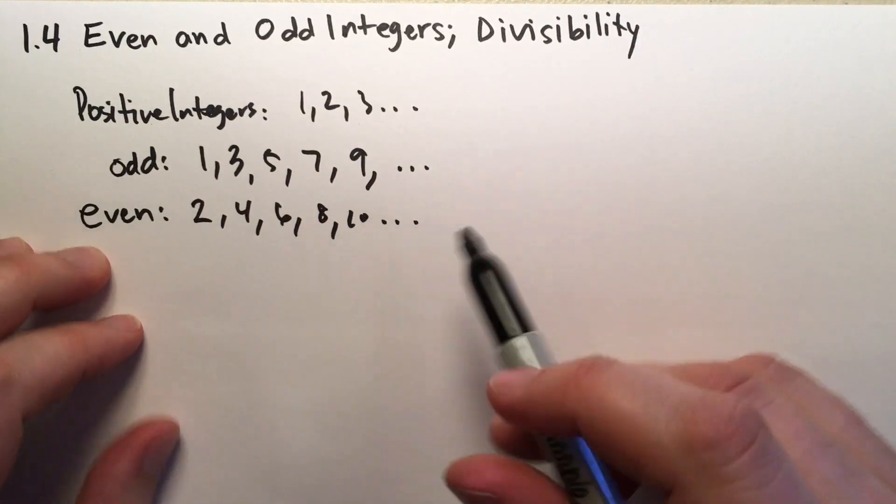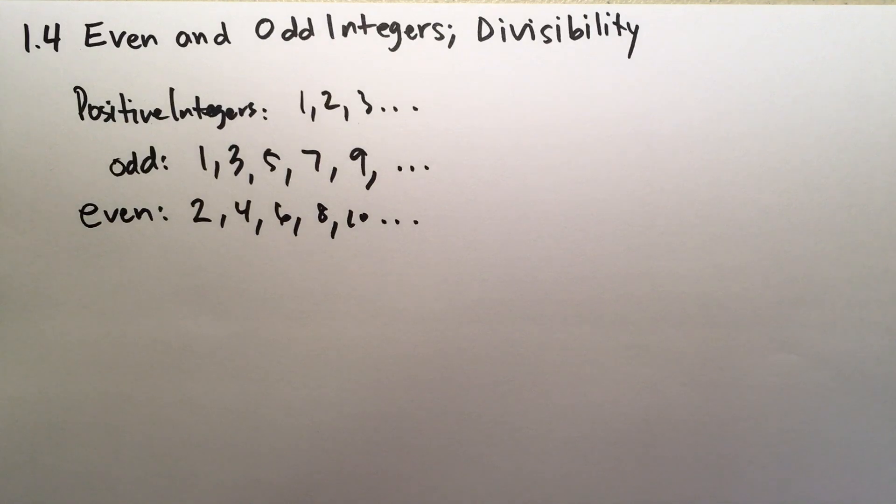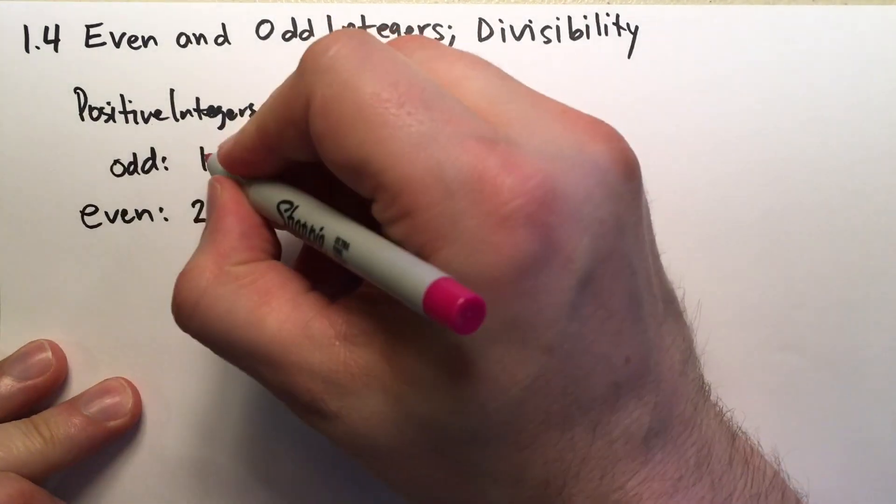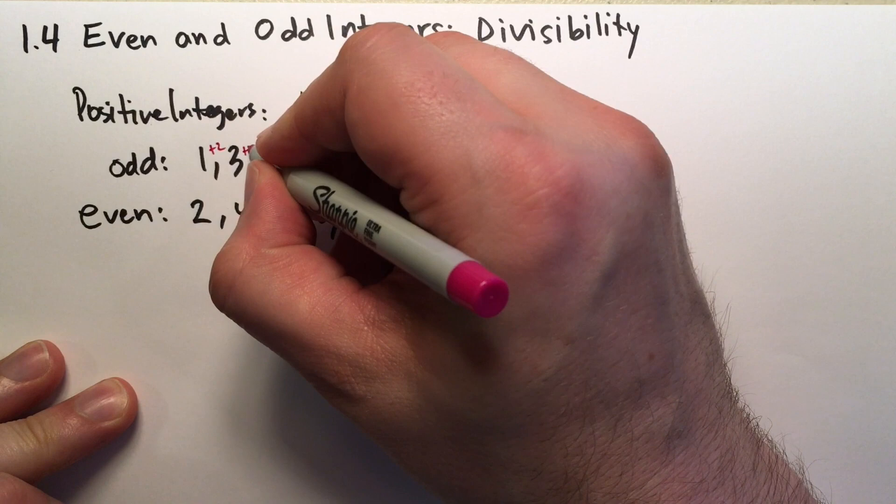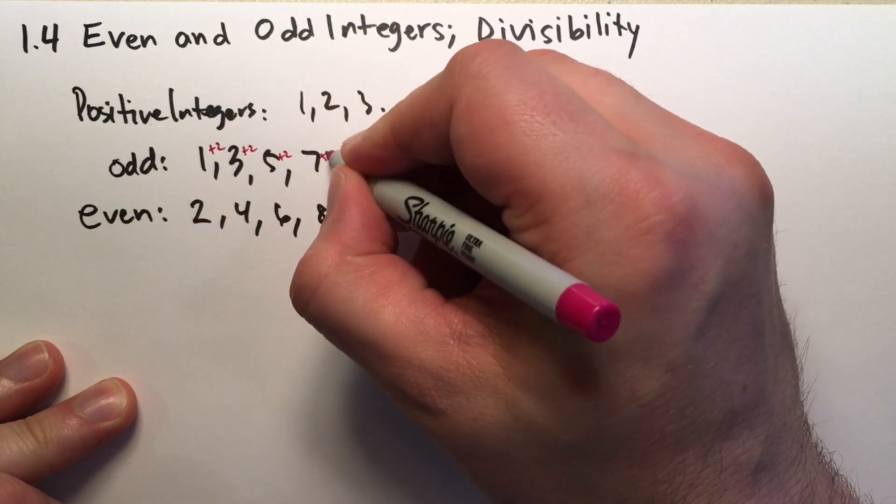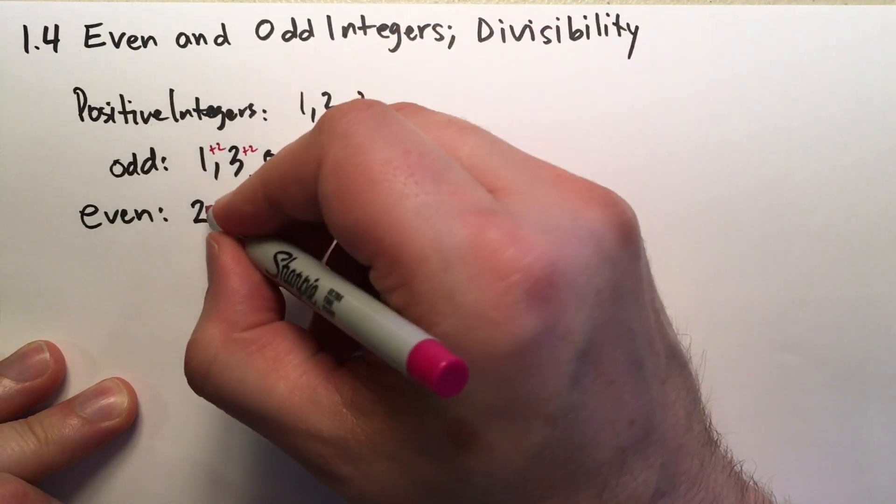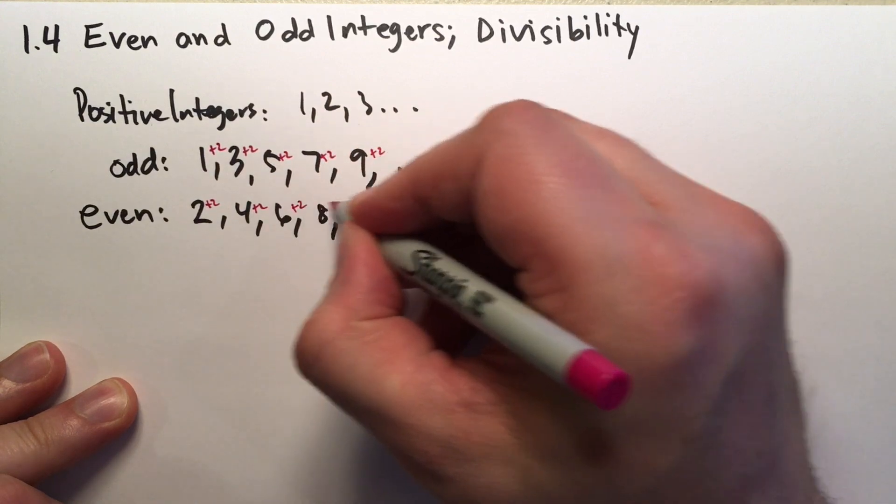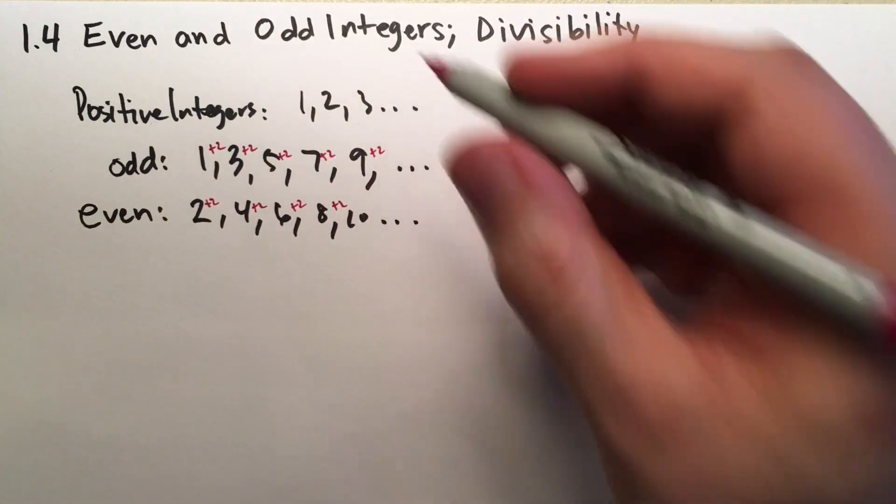And you'll notice that these numbers, when they increment by 2 each step of the way. So we go plus 2, we add 2, we add 2, we add 2, we just keep adding 2. Same for down here, 2 plus 2 is 4, 4 plus 2 is 6, 6 plus 2 is 8, 8 plus 2 is 10, etc.